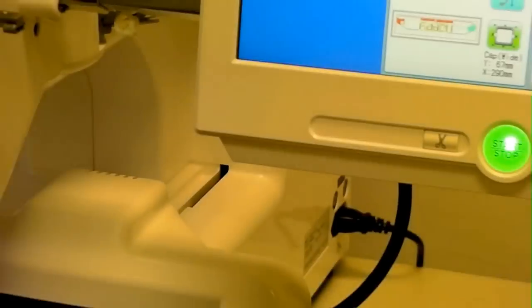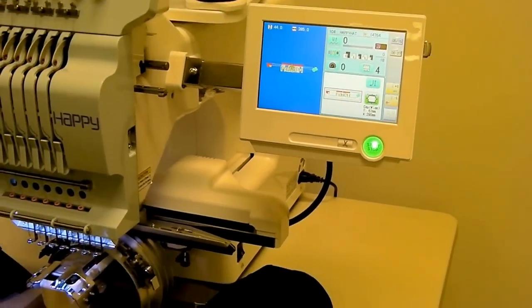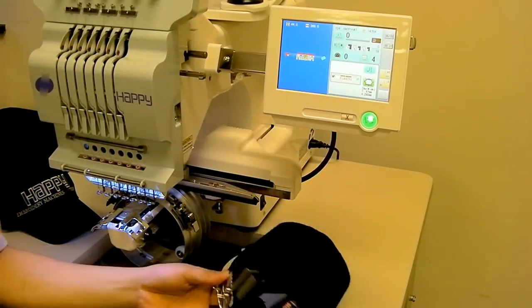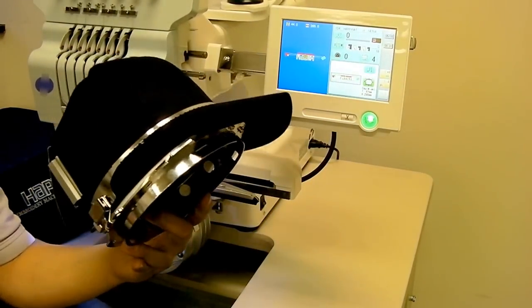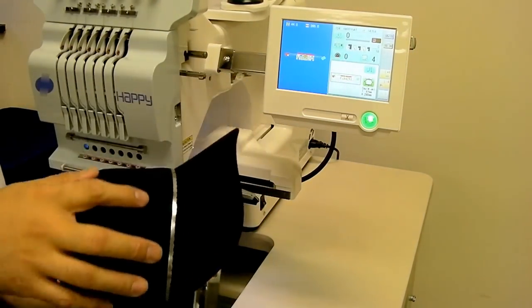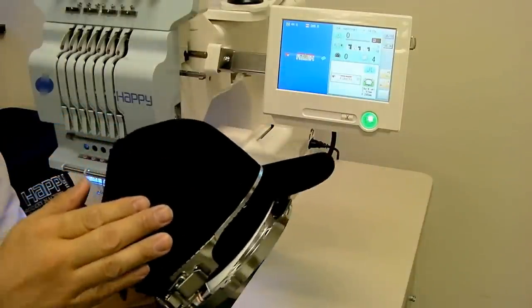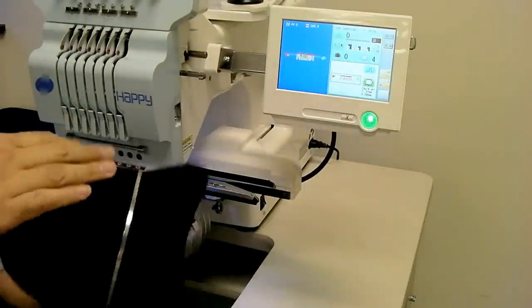And going back out to the machine view itself, let's go ahead and install that cap hoop onto the machine. The optional wide cap sewing kit has an open area in the front that allows us to sew on the front, and you can see there's nothing blocking it from doing the front and the sides.